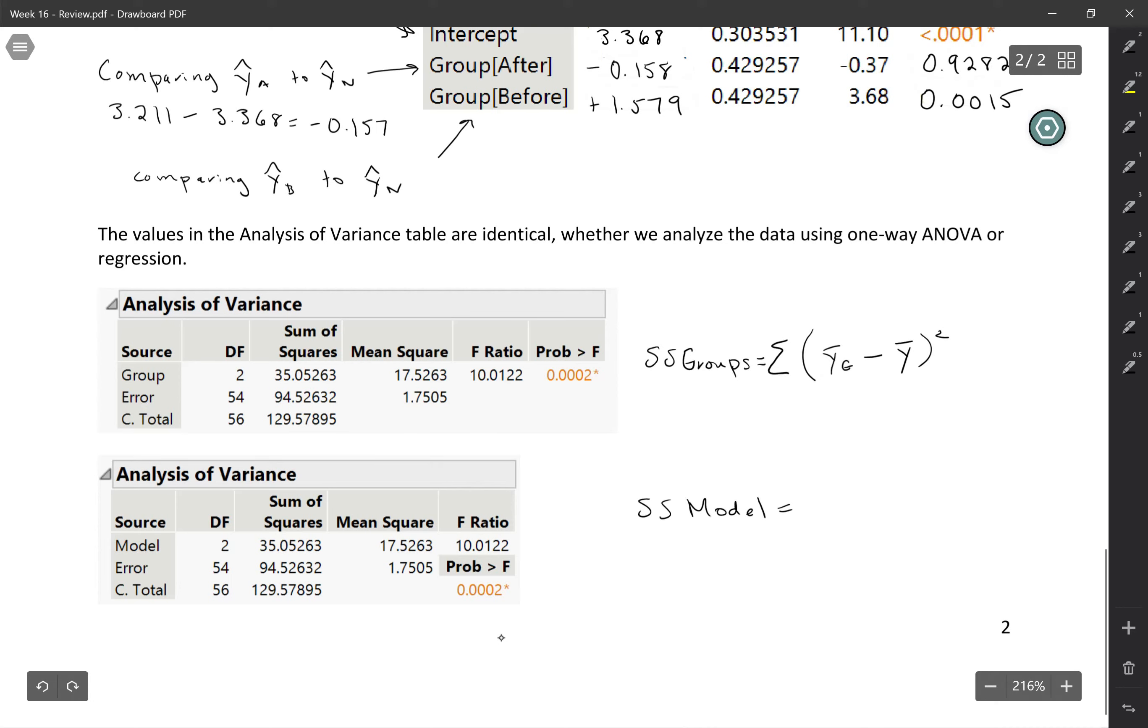For SS model, it's going to be really similar, except here, instead of using the mean for each group, we're doing the predicted value, right? The predicted value of y minus the average value of y, summing all of those, squaring those, and summing them up. And the reason that these are the same is what we just showed, that we can go back and forth between the group means and the predicted values. So it turns out that when your explanatory variable is categorical, like what we have here, that your group mean is just the same as your predicted value. So whether you get there through indicator variables or just directly by taking the mean for the group, those are the same value. So SS groups is going to be identical to SS model.